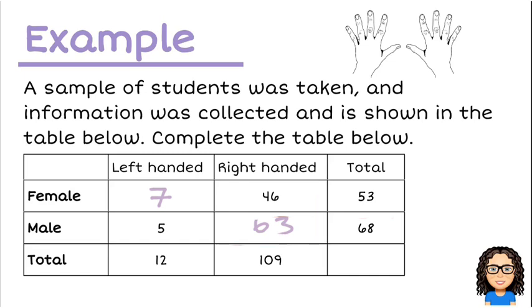So now I just need to find the overall total. So again, there's two ways. The 53 plus 68 has to add up to the grand total, and 12 plus 109 also has to add up to that same total. So if I add those up, that's going to give me 121. So there's our first step, it's completing the table.